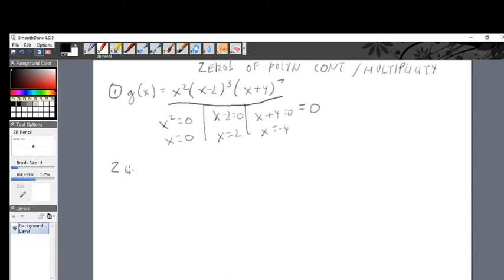So our zeros, our zeros are zero, two, and negative 4. Here are our zeros.